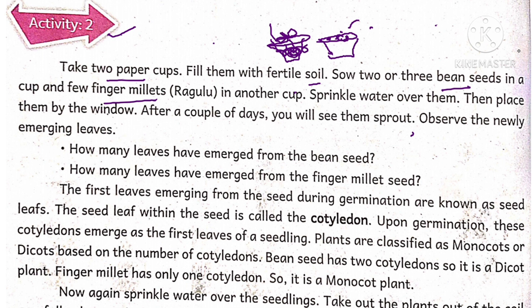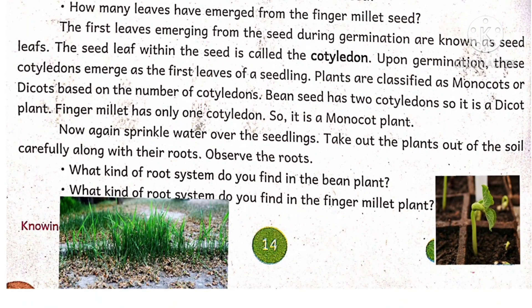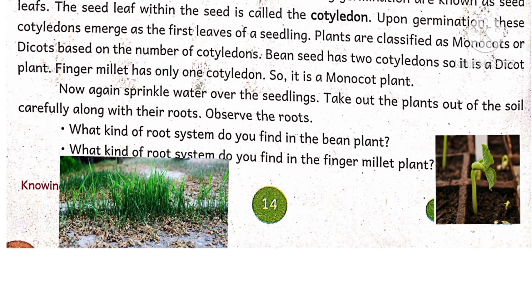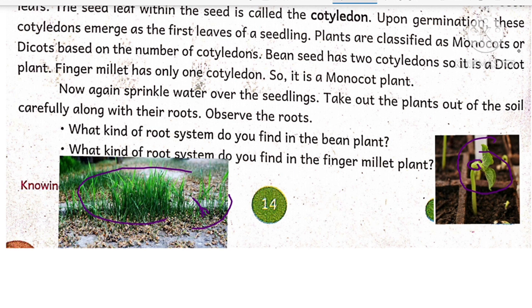After a couple of days, observe the newly emerging leaves of the sprouts. Take out the plants from the soil carefully and observe their roots. The bean plant has two seed leaves, but the wheat plants have only one seed leaf.